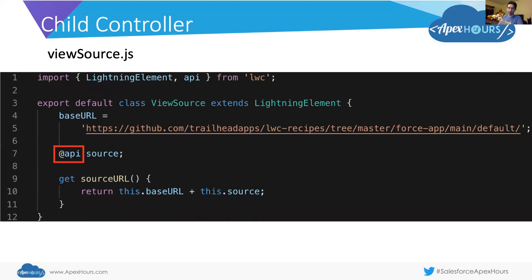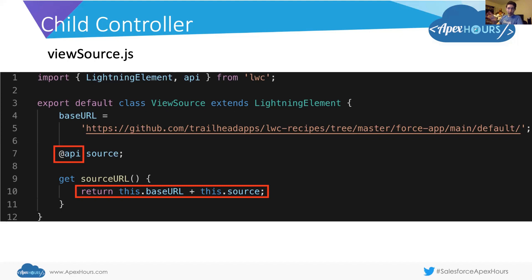Here's the controller for our viewSource component. Again, we have our import and export. We have a base URL variable on line four pointing to that GitHub repository. On line seven, we have the source variable we passed a value into. How are we able to pass a value into source? That's using the @api decorator. We talked about @track — makes the variable private and reactive. Well, @api also makes it reactive and re-renders, but it also makes it a public variable. Because it's public, we were able to pass a value into it from ldsCreateRecord. We have our base URL and our source, we calculate our sourceURL based on both, so we can use this viewSource component in pretty much any component and have it link to a different part of our GitHub repository.